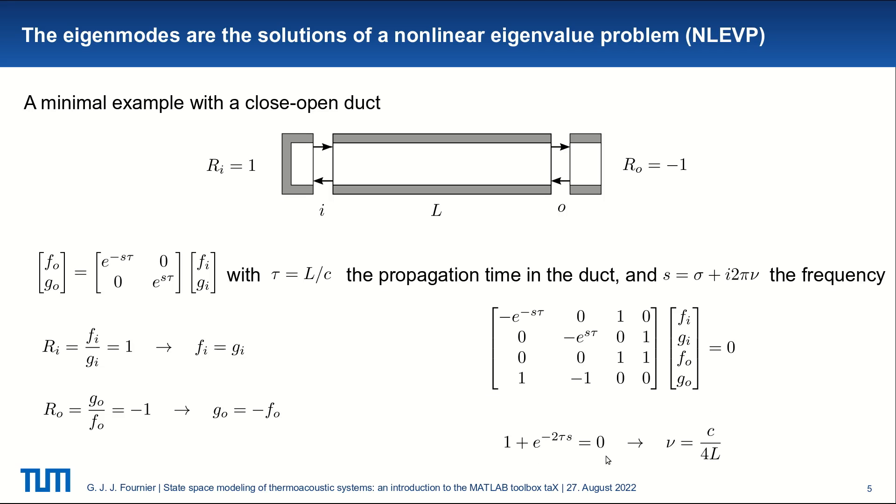So in this simple problem, it can be solved by hand, we have this dispersion relation. And if we look for the fundamental mode, for example, we retrieve the classical results that we will have a quarter wave mode. So in this very simple example, we could solve it by hand. In general, it's not the case. And in particular, I want to highlight the fact that in the matrix, we have these exponential terms and an explicit dependence in frequency s, which makes this problem non-linear.